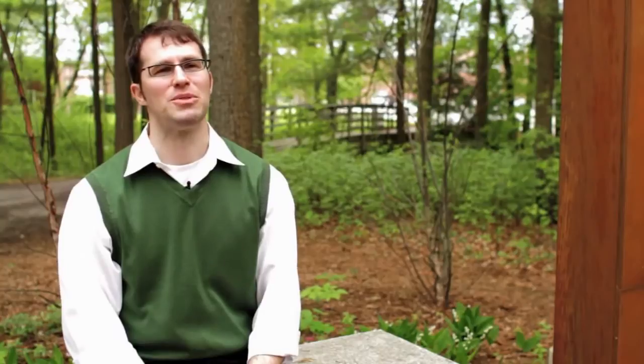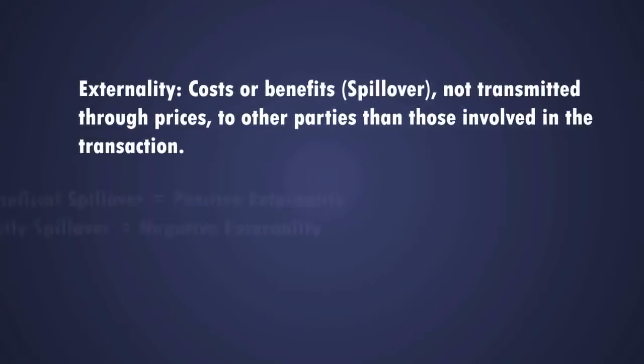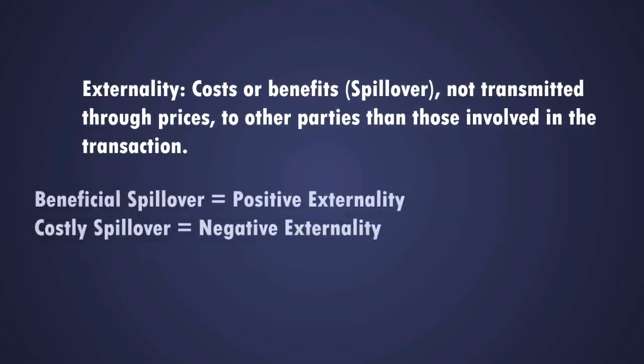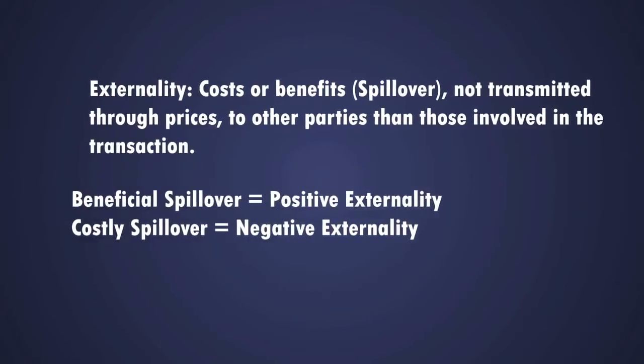Voluntary exchange will only take place if both parties perceive that they're better off. Sometimes these exchanges result in spillovers. We call these spillovers externalities. If the spillover is beneficial, we call these positive externalities. If they're costly, we call them negative externalities.